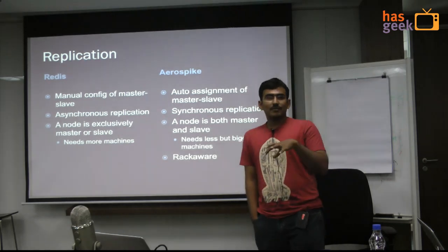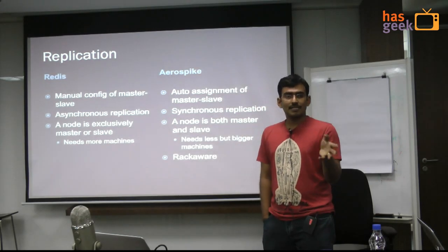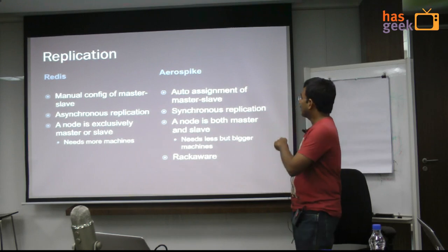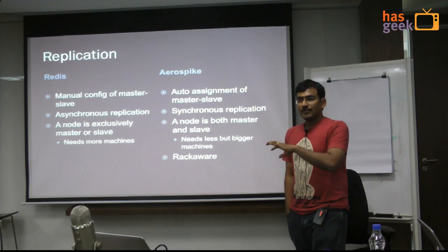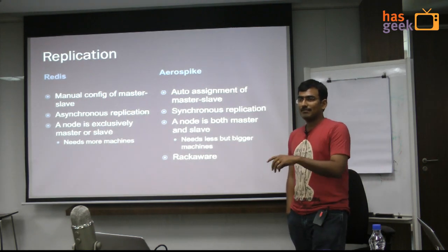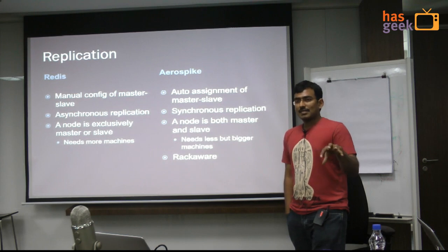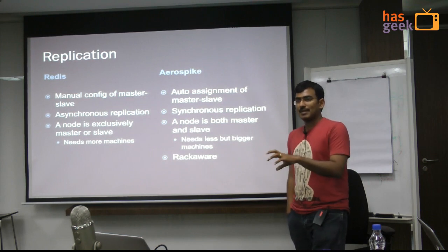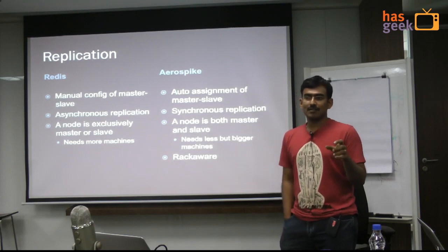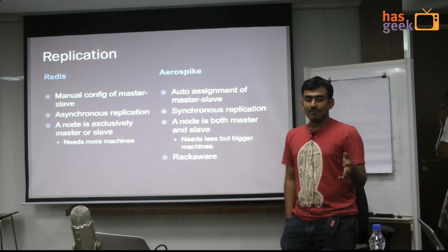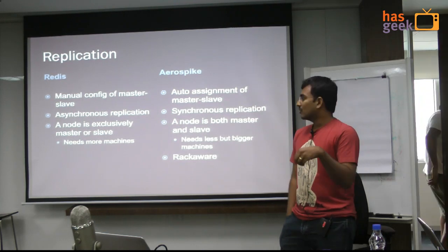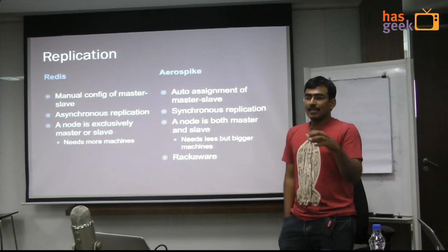Aerospike has a warm restart capability — indices are kept in shared memory even if the process goes down. When you restart the process, you don't need to rebuild the whole index by scanning disk again. For planned downtime during upgrades, a rolling upgrade just requires bringing down the binary, upgrading, and restarting — it attaches to the previous state. What used to take 30 minutes now takes about 10 seconds. For replication, Redis requires manually configuring masters and slaves, whereas Aerospike automatically decides masters and slaves, and the same node can act as master for some partitions and slave for others.